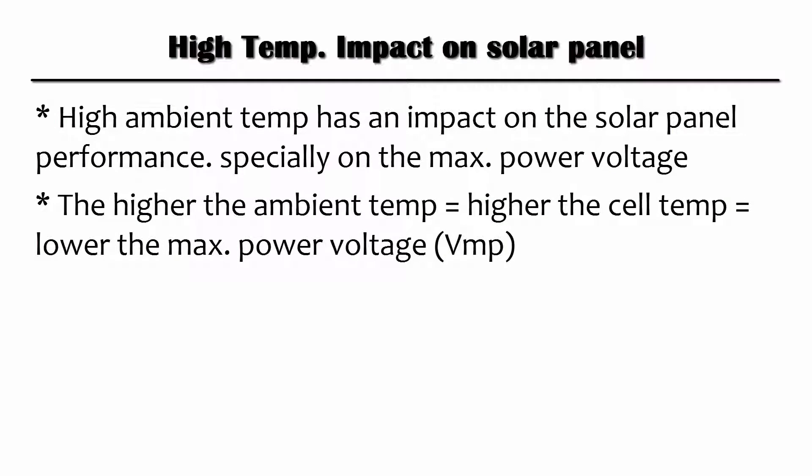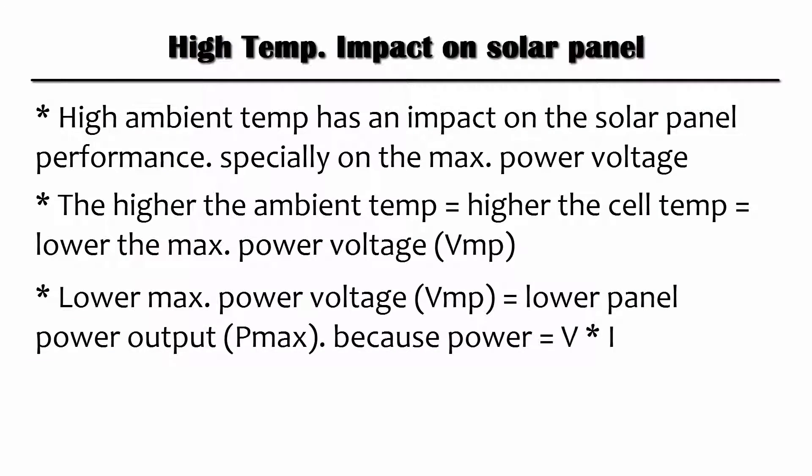The higher the ambient temperature, the higher the cell temperature, and the lower the maximum power voltage. Lower maximum power voltage means lower panel power output, because the power value is a product of the voltage times the current.